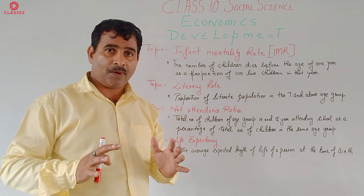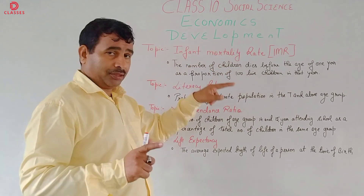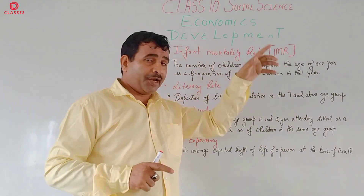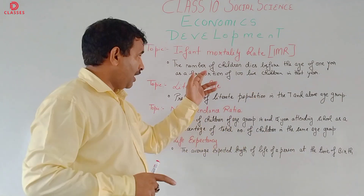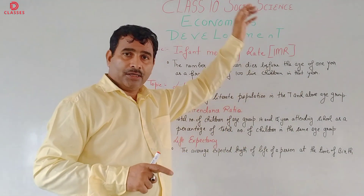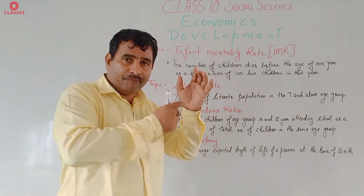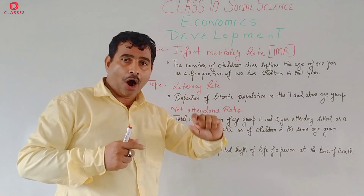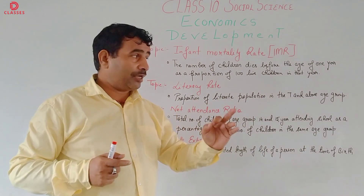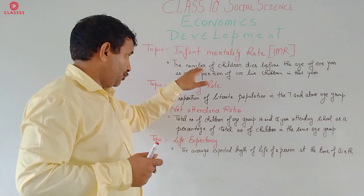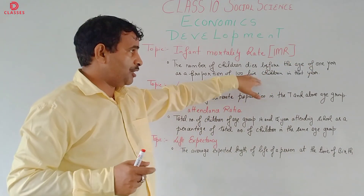What is the Infant Mortality Rate? The number of children who die before the age of one year. Suppose today one hundred children are born, and within those hundred children, how many children are alive after one year — that is known as the Infant Mortality Rate. It is the number of children who die before the age of one year per hundred live births in that year.